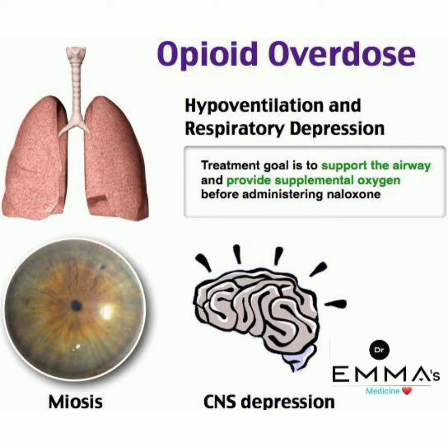Naloxone is the antidote for opioid overdose. In terms of clinical presentation, opioid overdose causes miosis — which is constriction of the pupils — and CNS depression. These are the important features of opioid overdose.